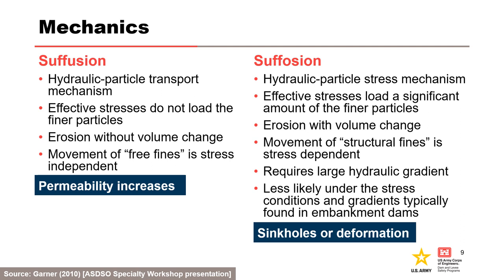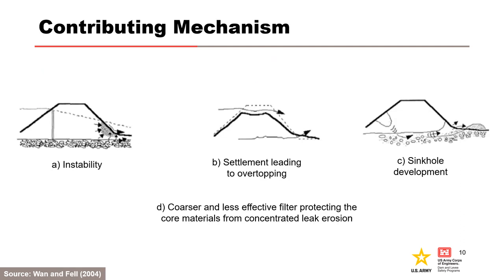Suffosion is less likely under the stress conditions and gradients typically found in embankment dams. We are not aware of any case histories leading to breach. Therefore, suffusion is considered a secondary mechanism that can lead to one of the primary processes of internal erosion. Suffusion first results in an increase in permeability, greater seepage velocities, and under potentially higher hydraulic gradients, accelerating rate of suffusion. It can then lead to transport of substantial amounts of fines that can cause clogging and, occasionally, hydraulic fracture.